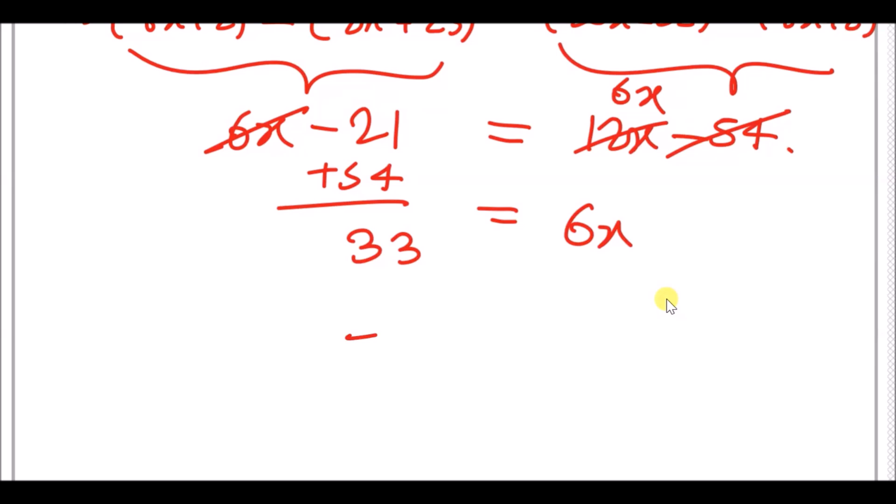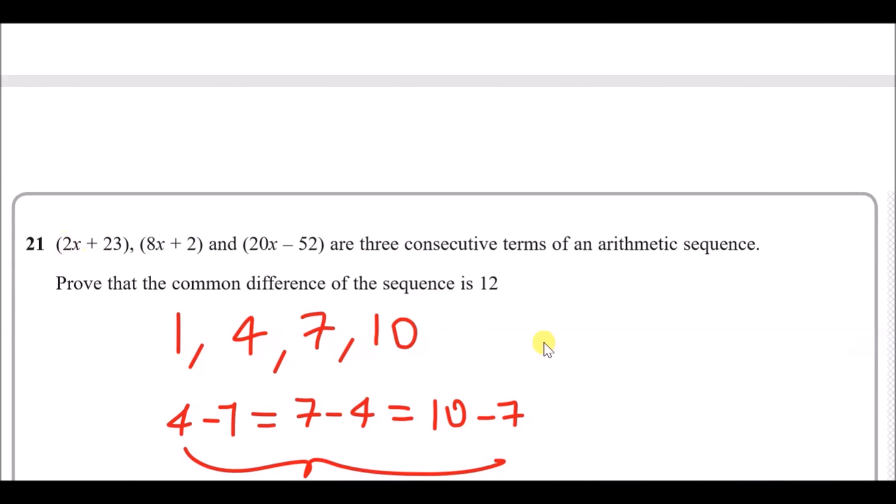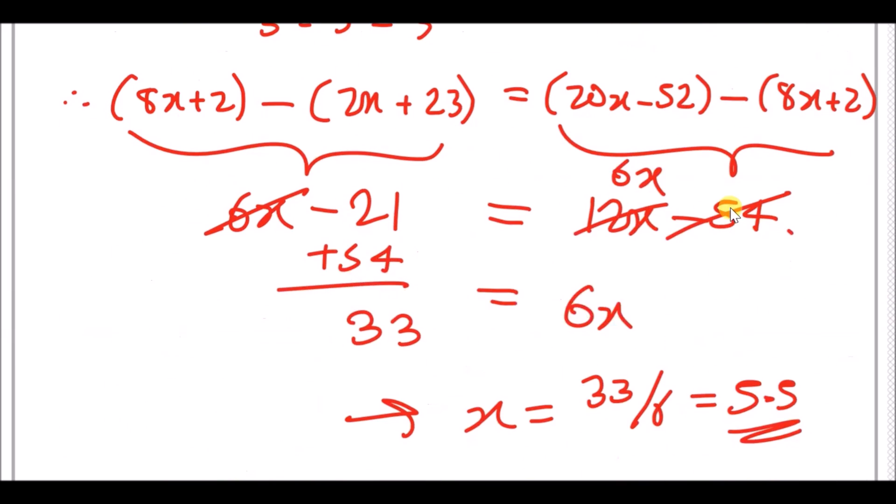That's 5.5. I was expecting a whole number. Anyway, since x is 5.5, let's go ahead and plug into the original values. Plug in 5.5 for here. You're going to have 2 times 5.5 plus 23. This is going to become 34. Plug in 5.5 there. x is 5.5. We're going to plug this into all the equations. The common difference is clearly 12 each time. And that's it. I hope you enjoyed this walkthrough. If you guys liked it and it was beneficial, please give me a like and share with your friends and your classmates.